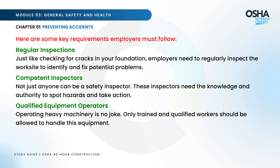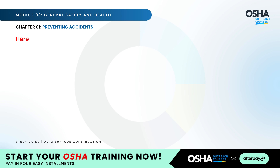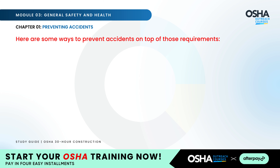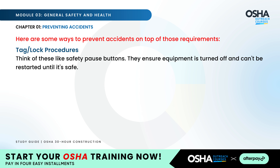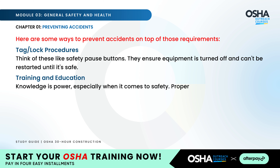Here are some additional ways to prevent accidents. Tag or lock procedures are like safety pause buttons — they ensure equipment is turned off and can't be restarted until it's safe. Training and education: knowledge is power, especially when it comes to safety. Proper training can help workers identify and avoid hazards.